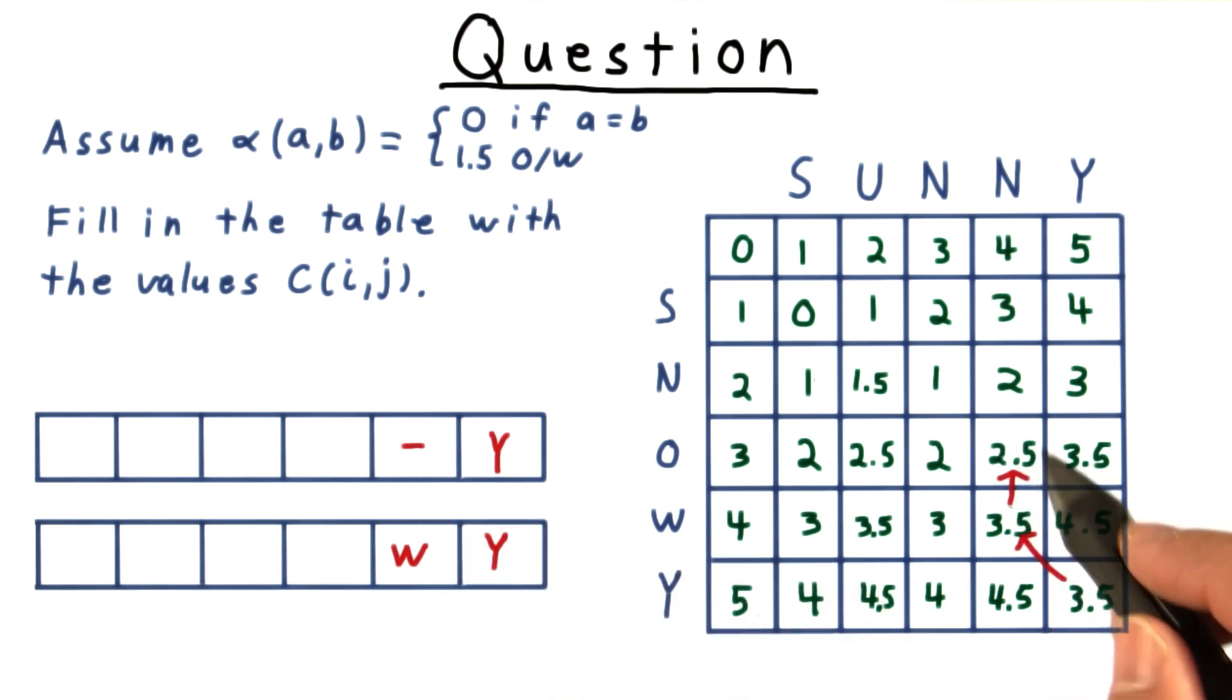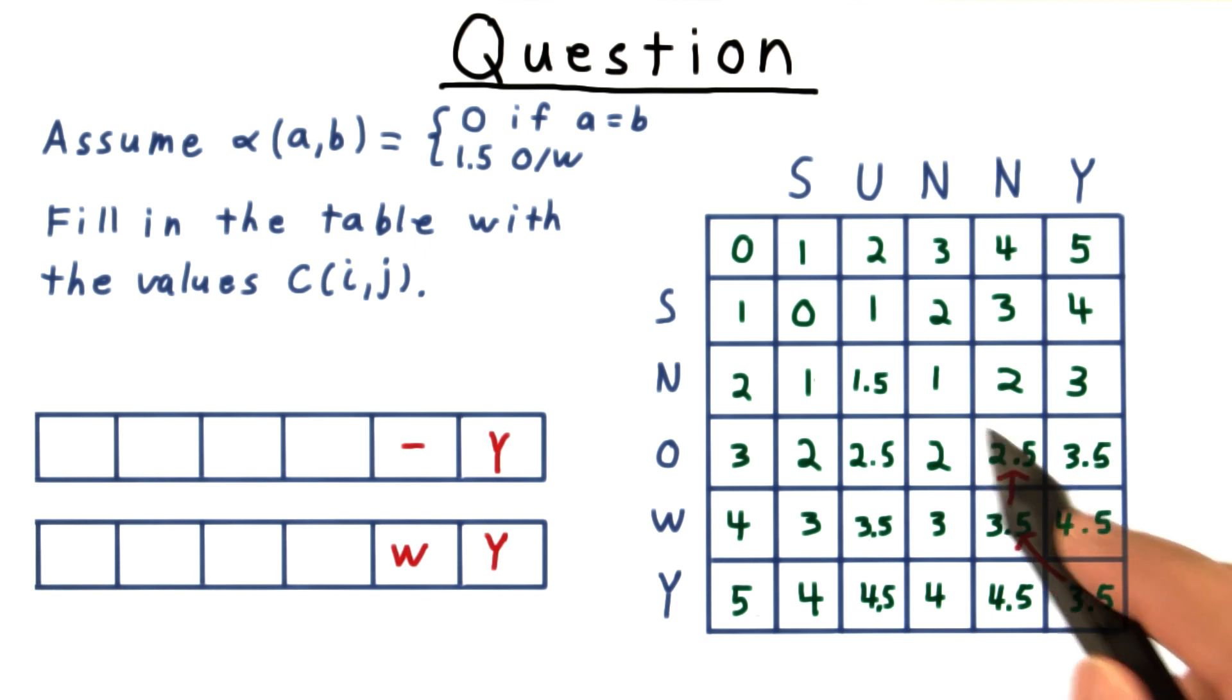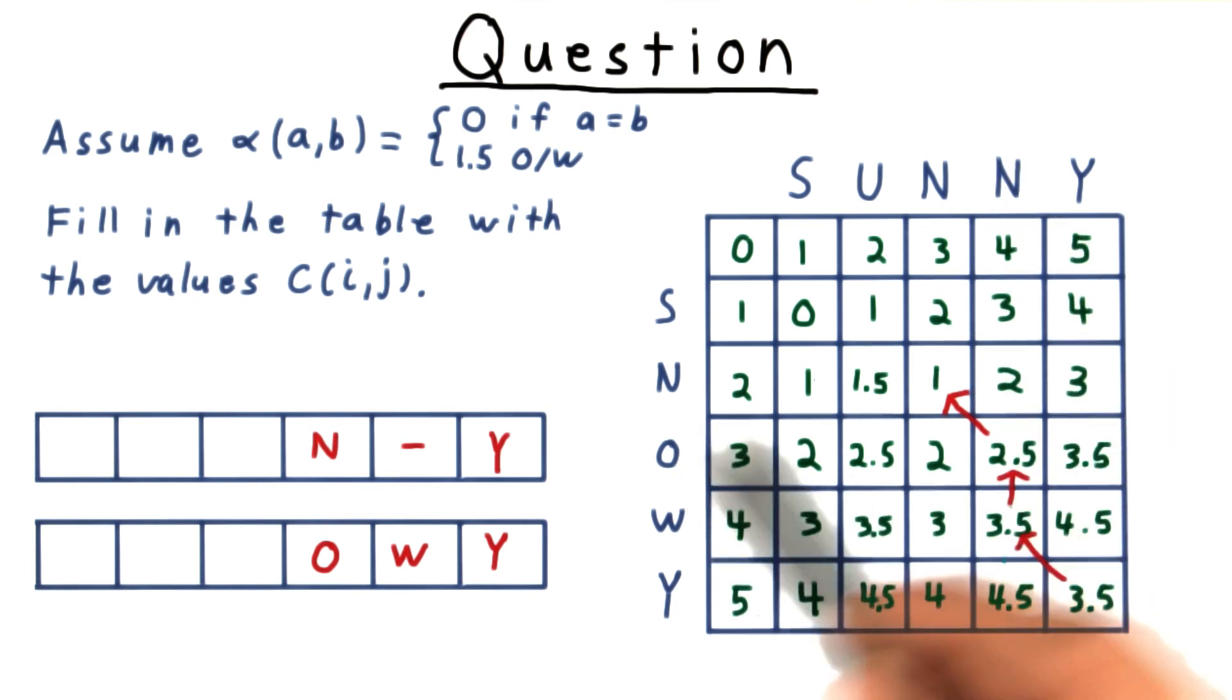Next, we have a cost of 2.5, which must have come from this northwest neighbor here, who has a cost 1. And that corresponds to matching these two characters together, o and n.